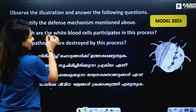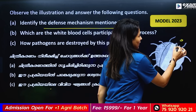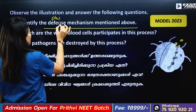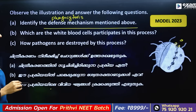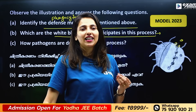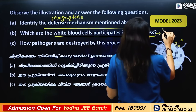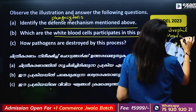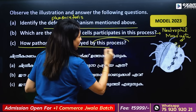Identify the process mentioned above. We call it phagocytosis. Which white blood cells participate in this process? The white blood cells participating are neutrophils and monocytes. How is the pathogen destroyed by this process?